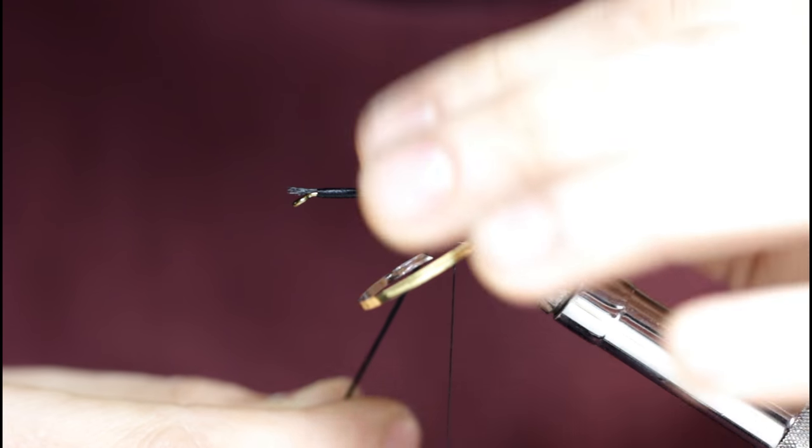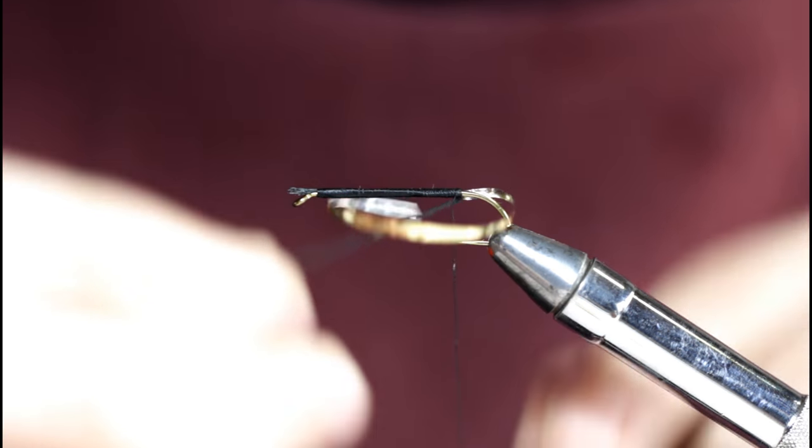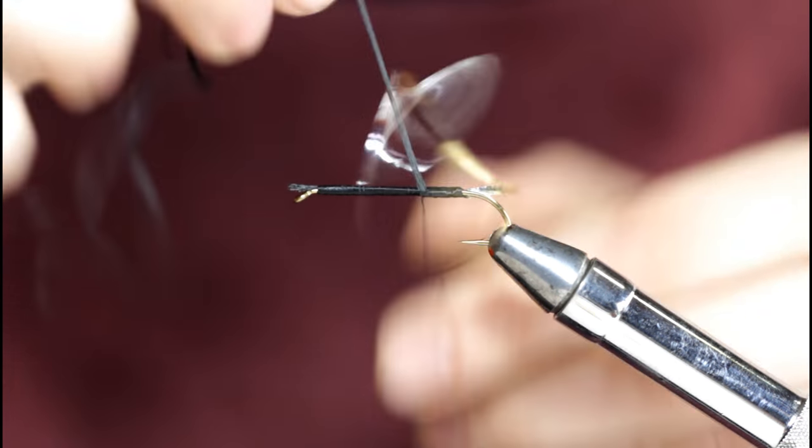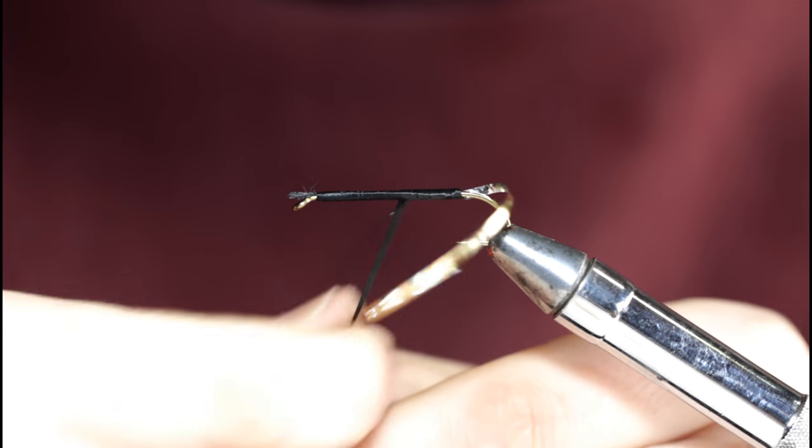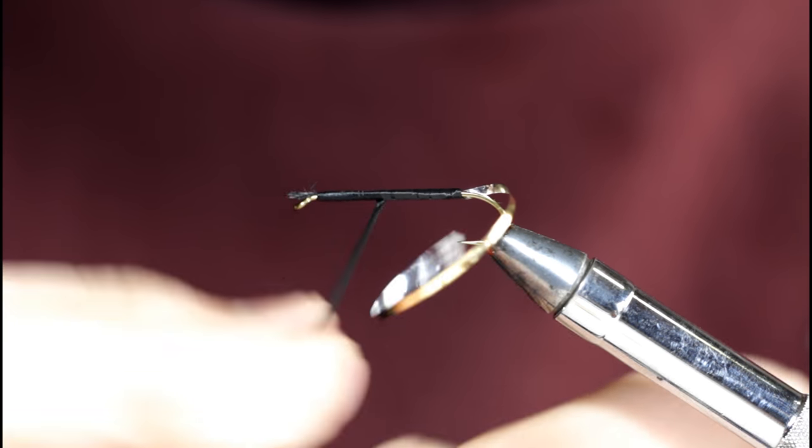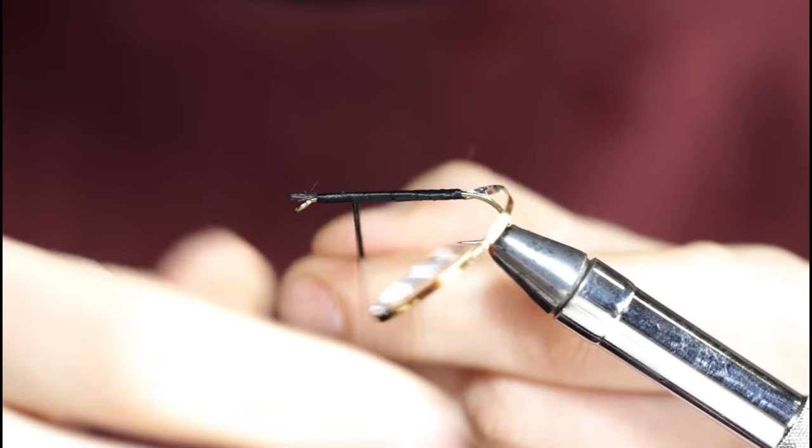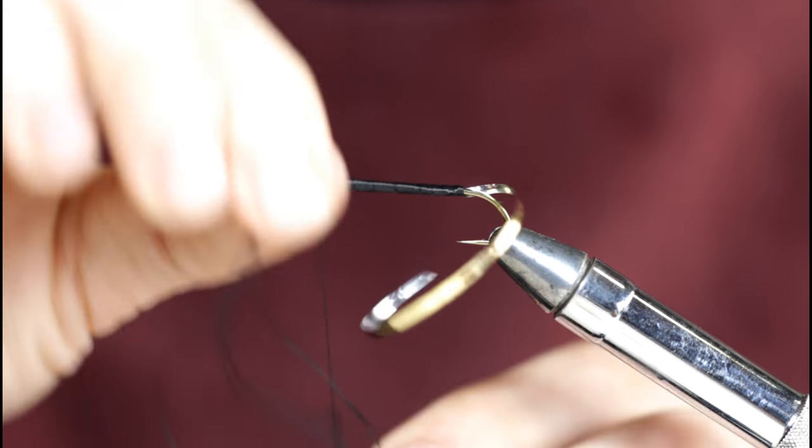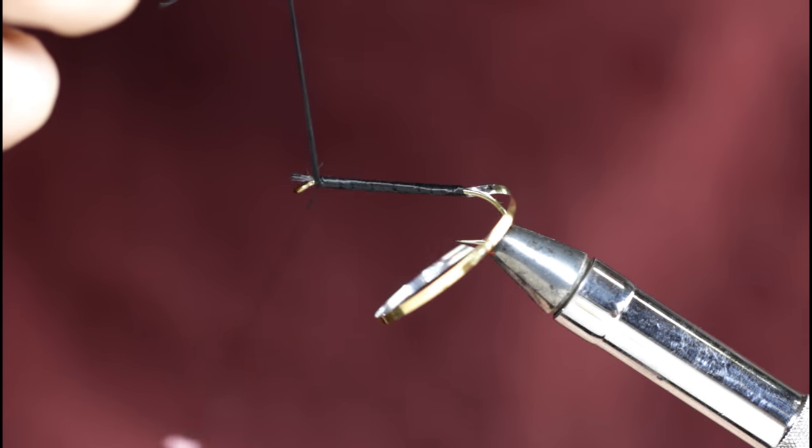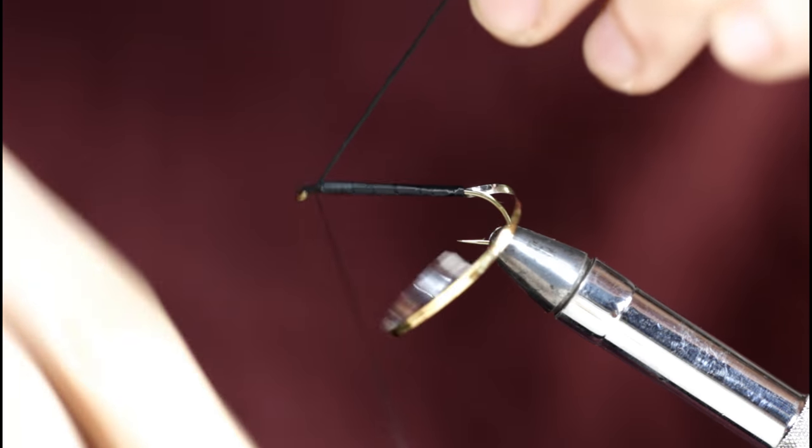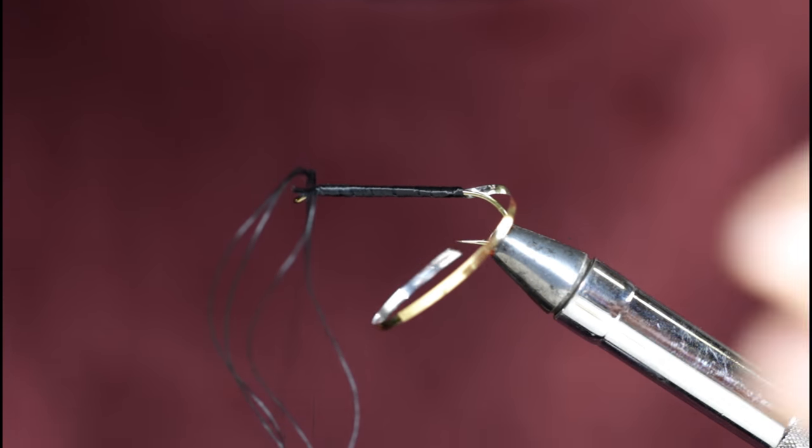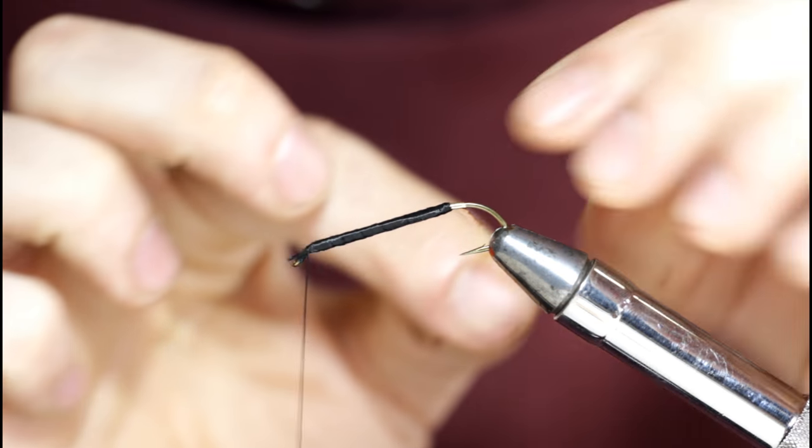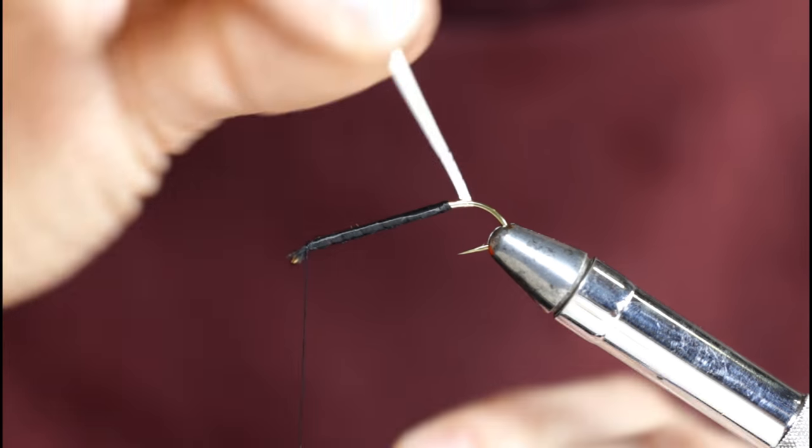Now I'm going to get a hold of the black floss here, try to get the tinsel out of my way while I wrap this forward. Just trying to get even touching turns here. Often times I will skip the step of adding black floss and just use my 280 UTC thread to build up an even body and wrap my tinsel over that. Up here at the hook eye I'll take a few turns over the floss and snip this off.